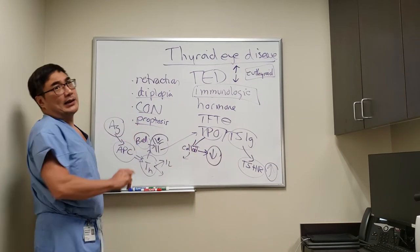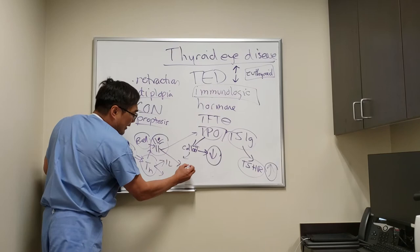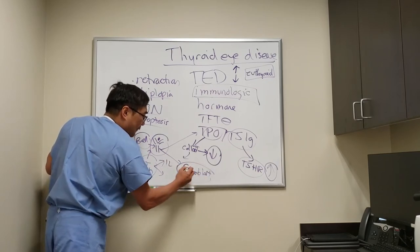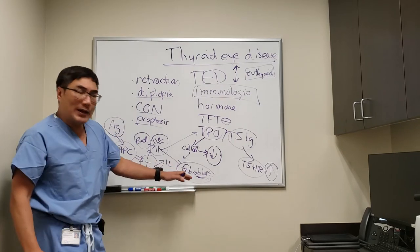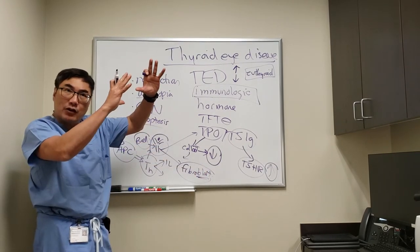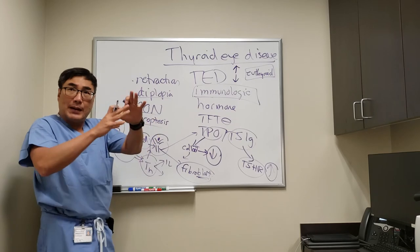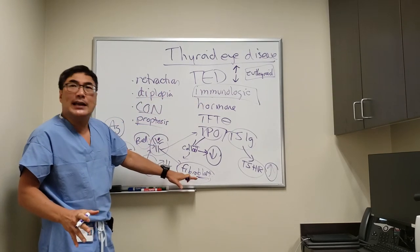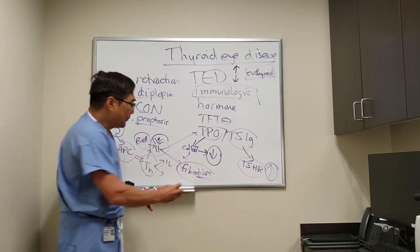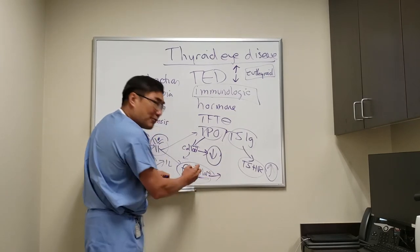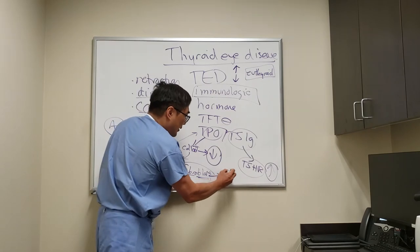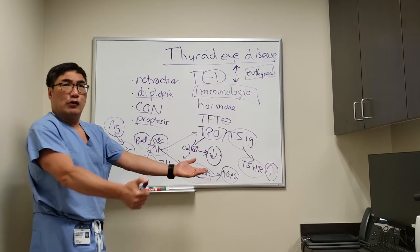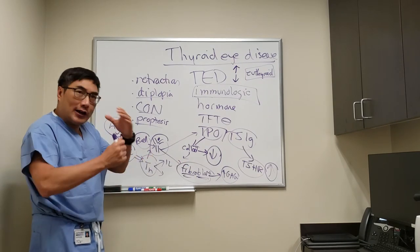And if that antigen happens to look like the TSH receptor or the thyroid peroxidase, then the antibodies produced by this differentiated B cell into plasma cell will cause clinical downstream effects on the thyroid. But the fascinating part is that this same antibody goes to the orbital fibroblast. That fibroblast can become an adipocyte and increase the fat in the orbit, or it can become a myocyte and lead to big muscles.